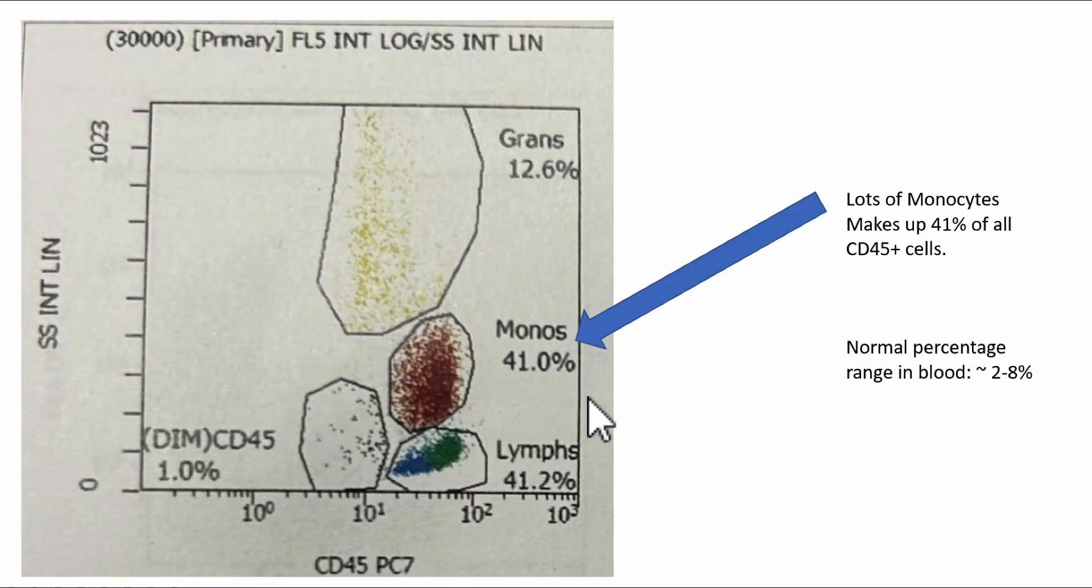So in this practice case, based on the side scatter pattern and the gating for monocytes is 41%. That's a lot, 41% of all the cells in the flow from a peripheral blood. Remember the normal percentage range for monocytes is two to eight percent.